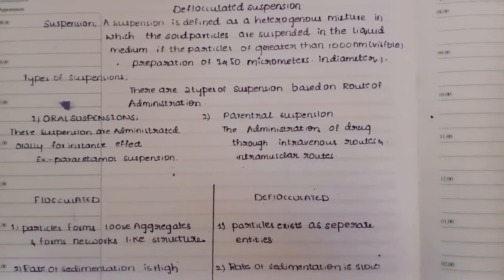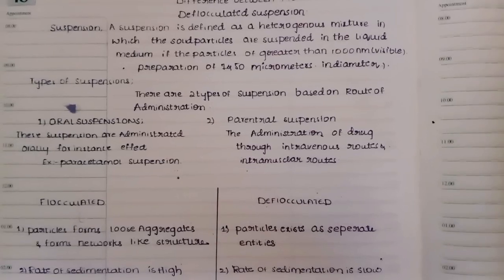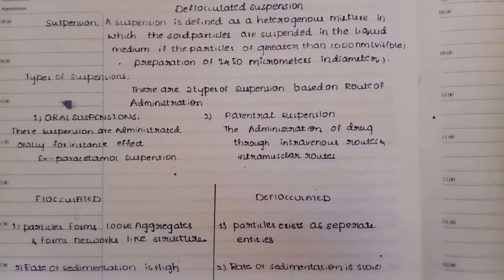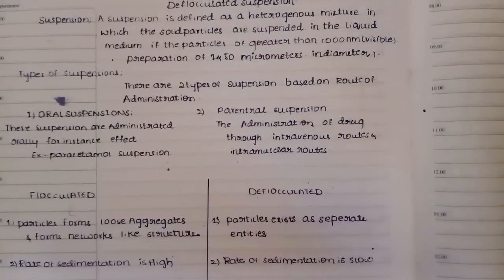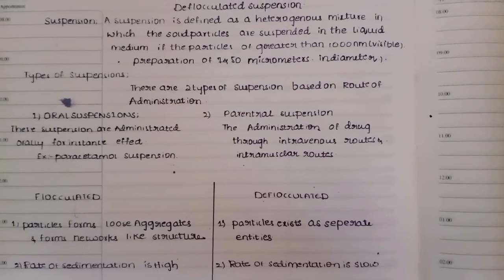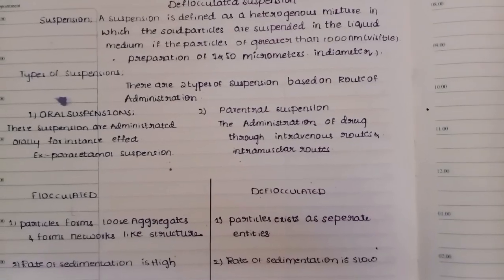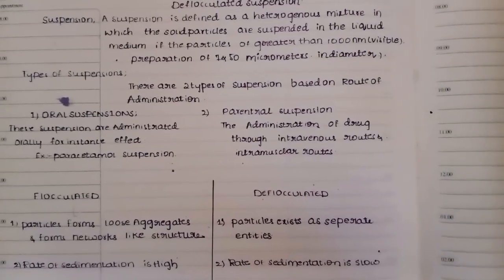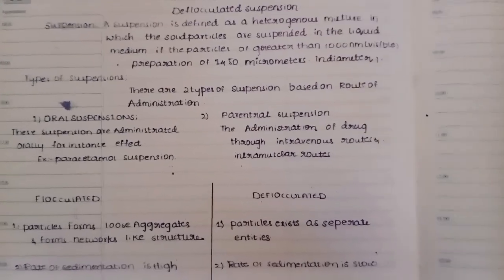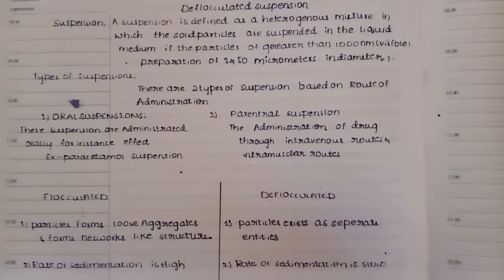That is a heterogeneous mixture, and 'suspended' means weight in a liquid medium. We add solid particles to the liquid medium to form the suspension. If a particle size is greater than 1000 nanometers, it is visible and we can see it. If less than 1000 nanometers, it is unable to be seen — we have to identify it using a microscope.